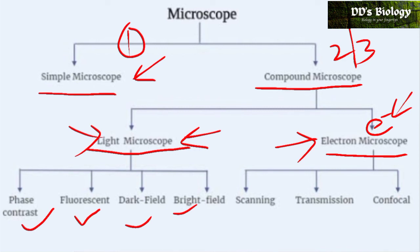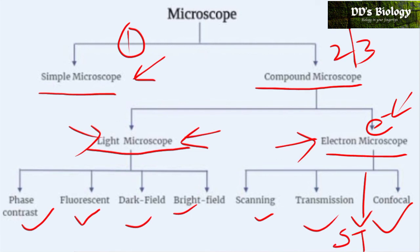The electron microscope includes the scanning electron microscope, transmission electron microscope, and the confocal microscope. Apart from that, STEM stands for scanning transmission electron microscope.